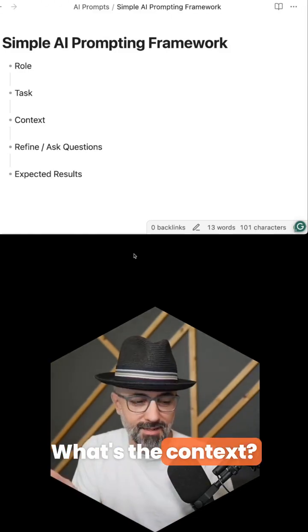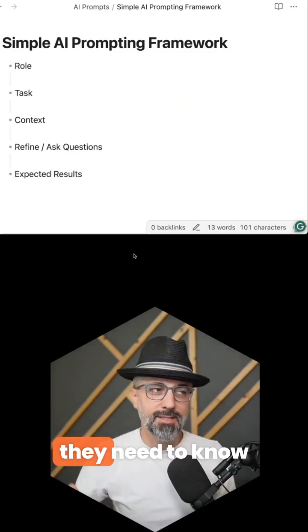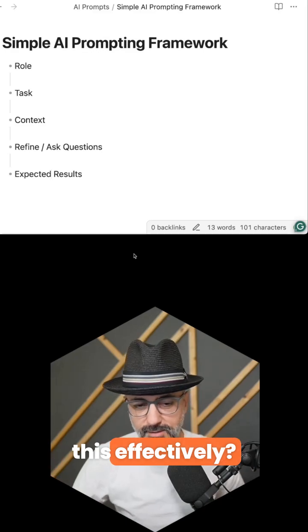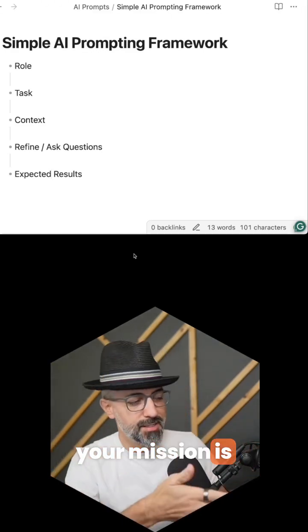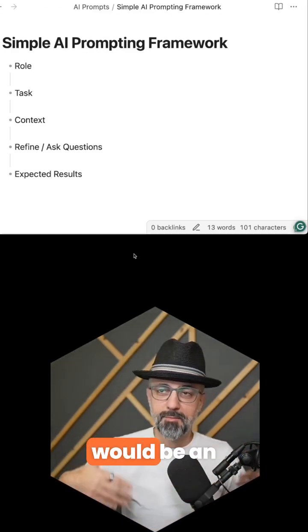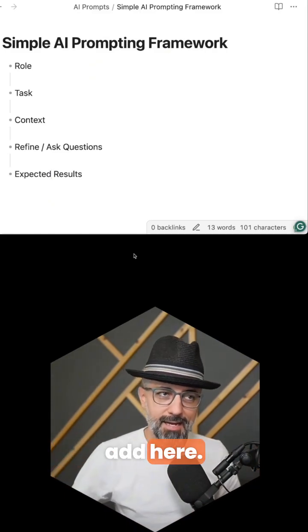Next, what's the context? What's the additional information they need to know in order to do this effectively? For example, if they need to know what your mission is related to the blog post, that would be an important contextual item to add here.